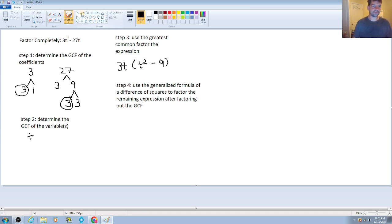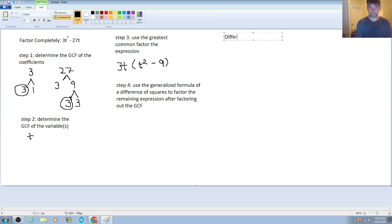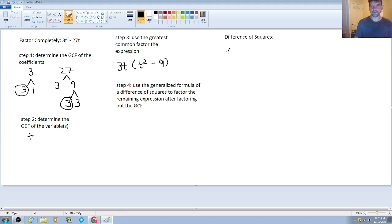So for a difference of squares, I'll kind of do it over here, is if you have an expression of the terms a squared minus b squared, its factoring method is going to be a plus b times a minus b.